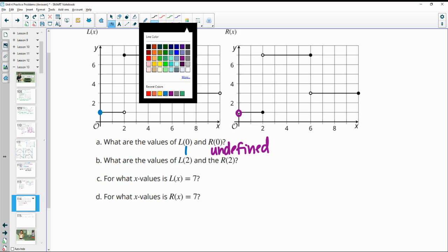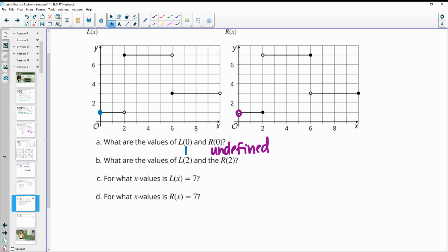The value of L(2). So when we go to two, this is an open circle, so it's not this one. So we're going to keep going until we get to this closed dot. So L(2) is seven. And R(2) is at two, the closed dot. So we're not going to go up to this one because an open dot means it's not part of the graph. So R(2) is one.